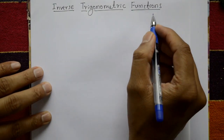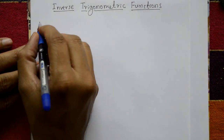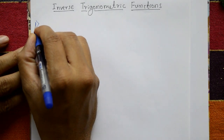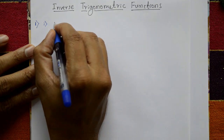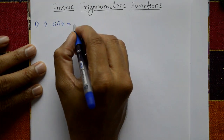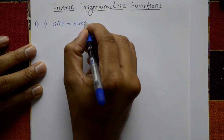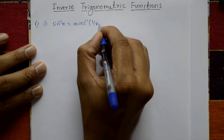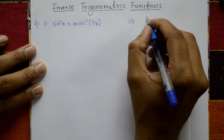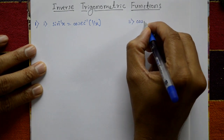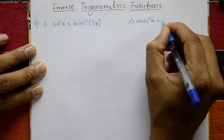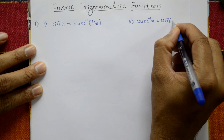Inverse trigonometry functions — very simple formulas. The first one: sine inverse x is equal to cosec inverse of 1 by x. The second one: cosec inverse x is equal to sine inverse of 1 by x.